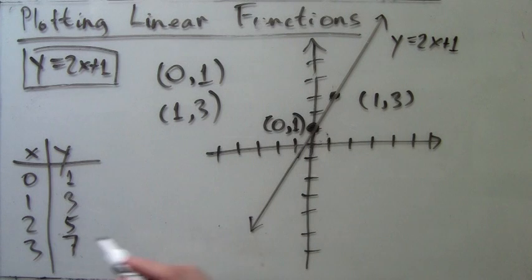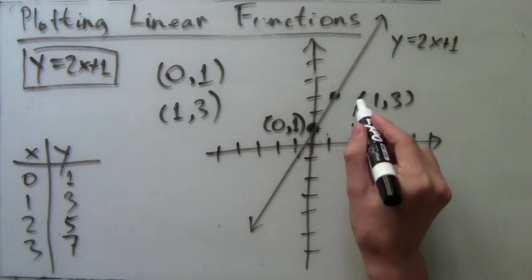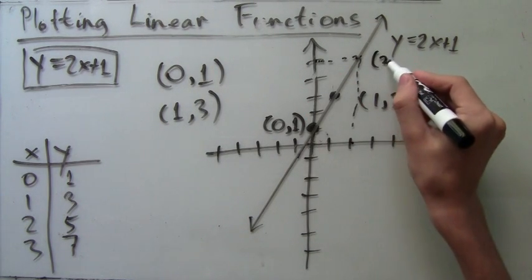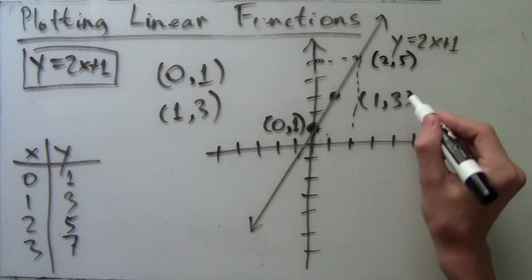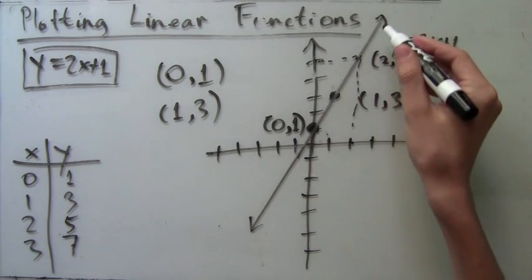According to the table, the point x equals 2, y equals 5 must also be on this line. Just to check—there it is indeed. At 2 to the right and 5 above the origin, the point is on the line, so it has been drawn correctly.